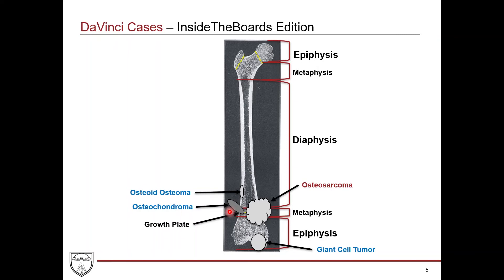On imaging, you very often see elevation of the periosteum, called Codman's triangle — it forms a triangular shape when elevated, almost like sticking a crowbar under the periosteal layer and lifting it up. These are very aggressive tumors, so you see both lytic bone destruction and bone formation, since they arise from osteoblasts. Treatment is typically surgical resection and sometimes chemotherapy.